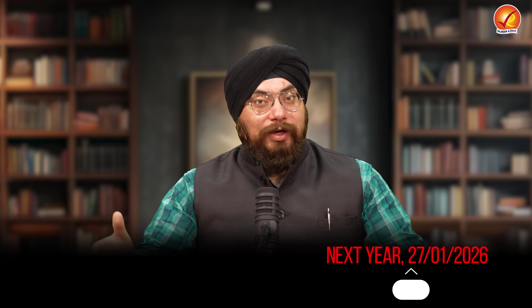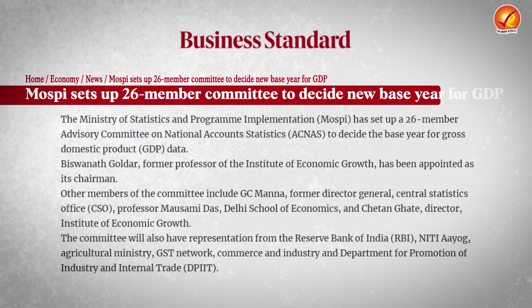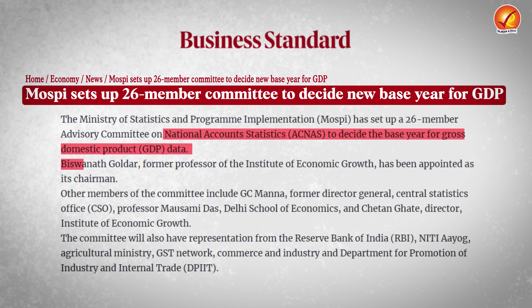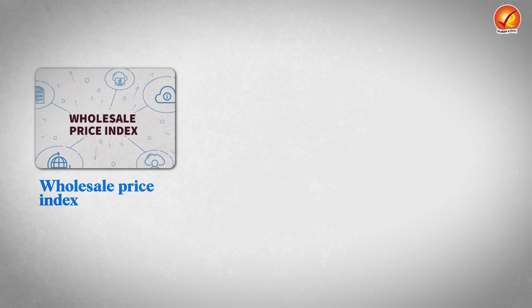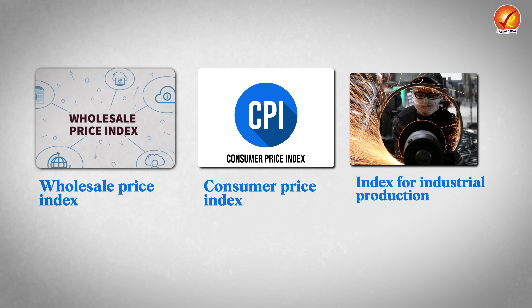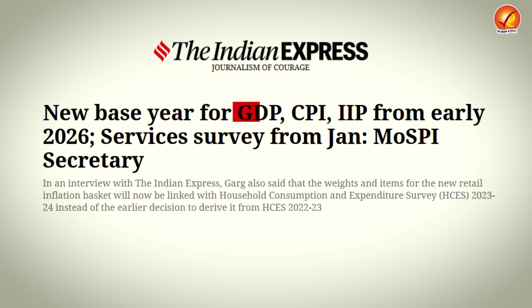All these changes would come into effect on the 27th of January 2026, when new data will be released with this particular base year. In June 2024, the Ministry of Statistics and Programme Implementation formed a 26-member Advisory Committee on National Accounts Statistics to decide the base year for GDP calculation, under the chairmanship of Biswanath Goldar. It also focused on aligning GDP calculations with other key macro indicators — wholesale price index, consumer price index, and index for industrial production. And as we can see now, the base year for GDP, IIP, and CPI has been revised this year.